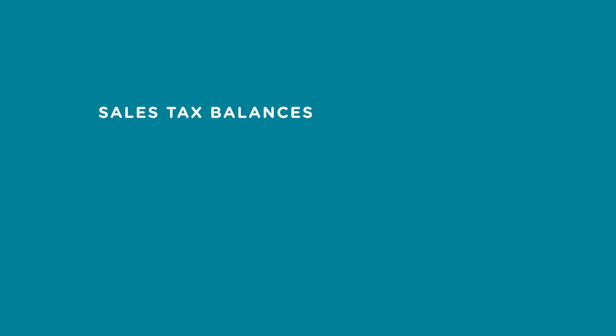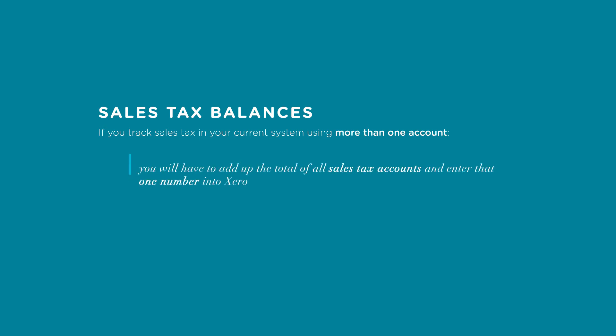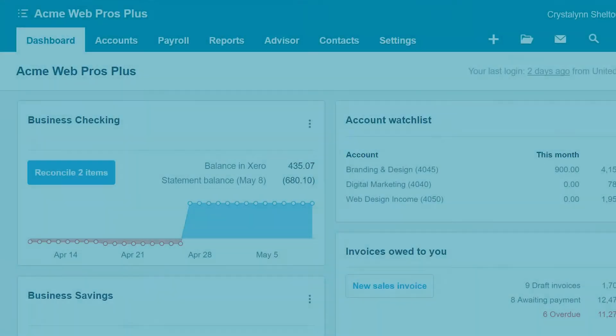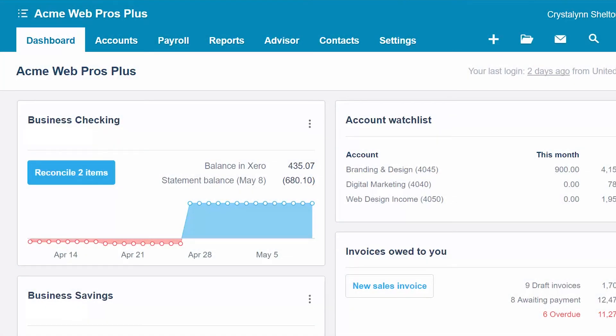The last piece of information that you will need has to do with sales tax balances. If you track sales tax in your current system using more than one account you will have to add up the total of all sales tax accounts and enter that one number into Xero. Xero only uses one account to track sales tax. In the how to set up sales tax lesson we cover how to set up, track, and pay sales tax. Now let's walk through how to enter your account balances into Xero.